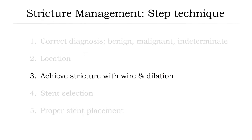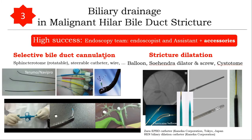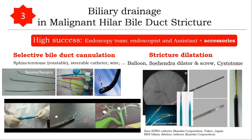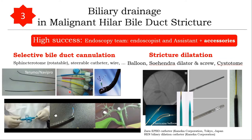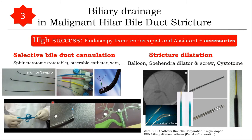Step 3: Achieving stricture with wire and dilation. As already mentioned, especially for hilar block in terms of selective cannulation, you can use this technique of rotatable single-lumen catheter and selective wire cannulation. This is the way you can achieve wire access for stenting.